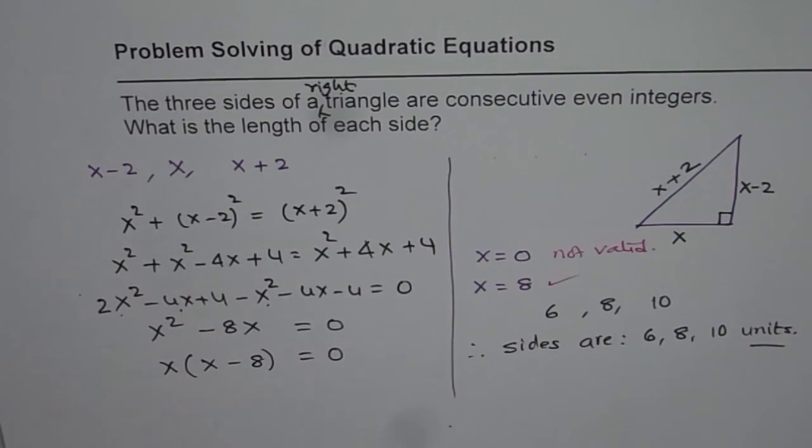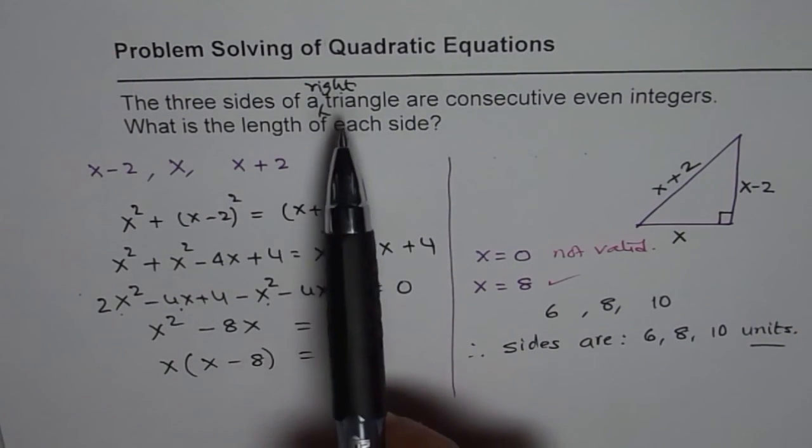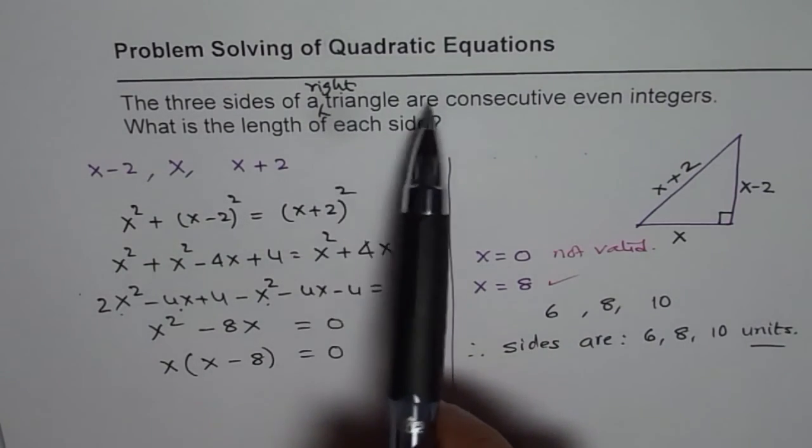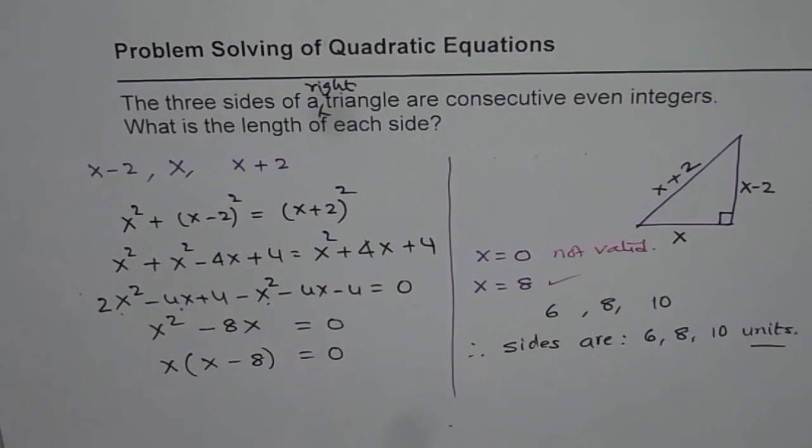So that is how we can solve this. I think you should make this correction here. The three sides of a right triangle are consecutive even integers. What is the length of each side? And then solve as we have done. I hope that helps. Thank you and all the best.